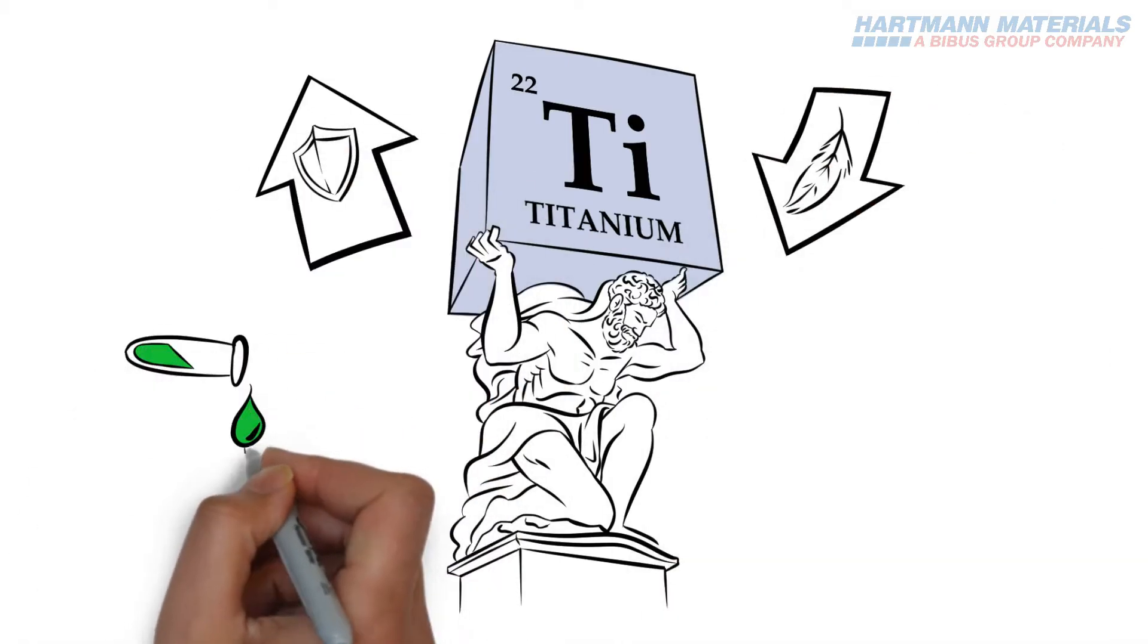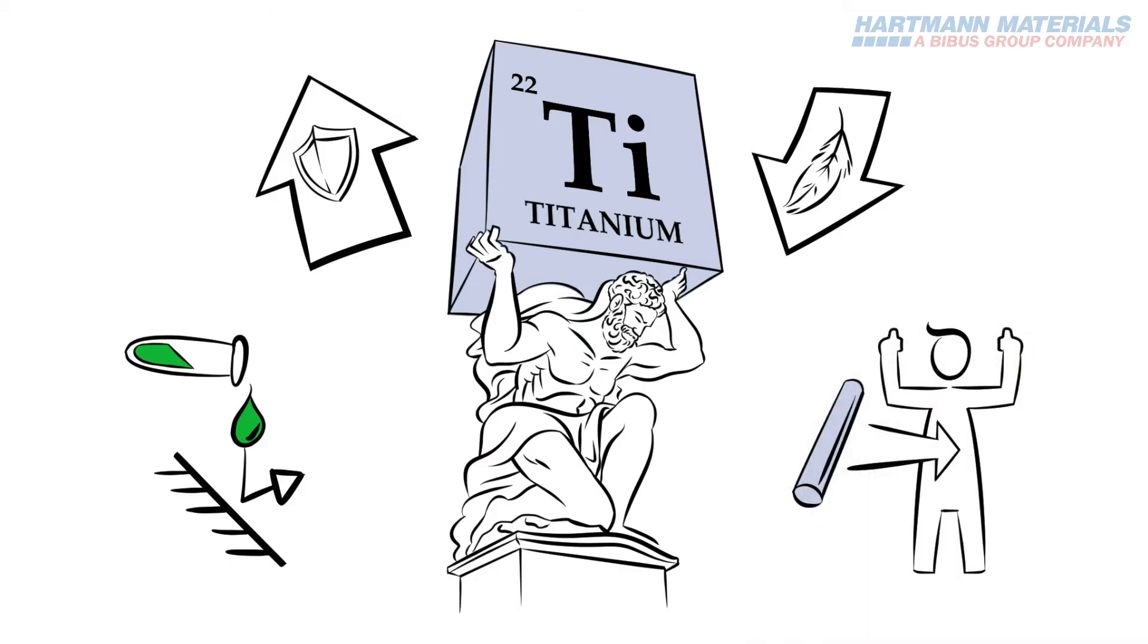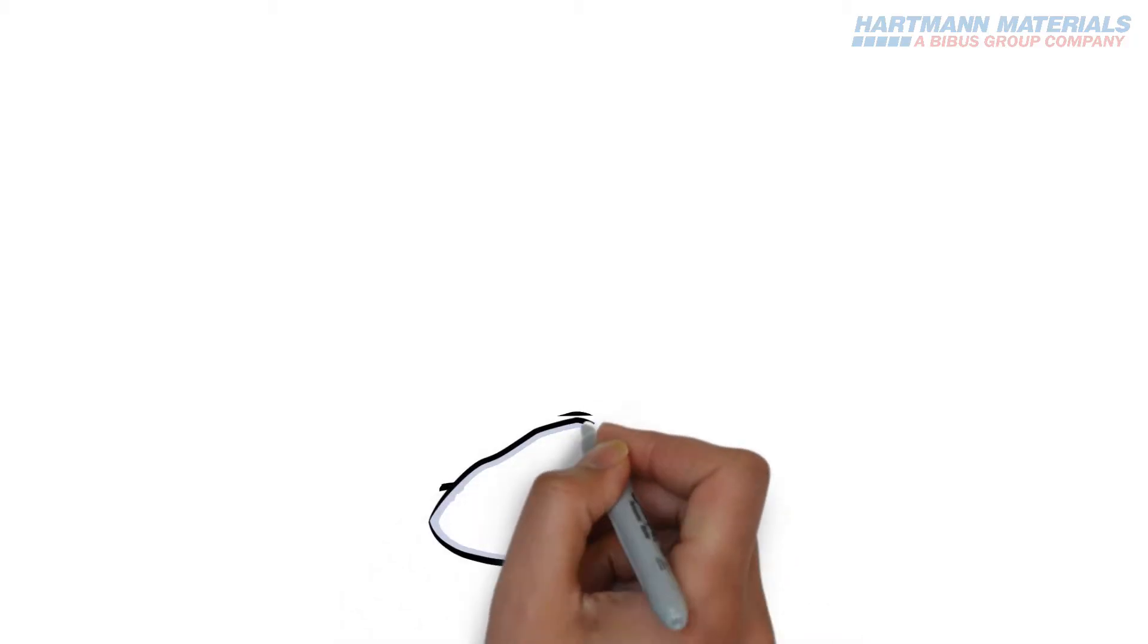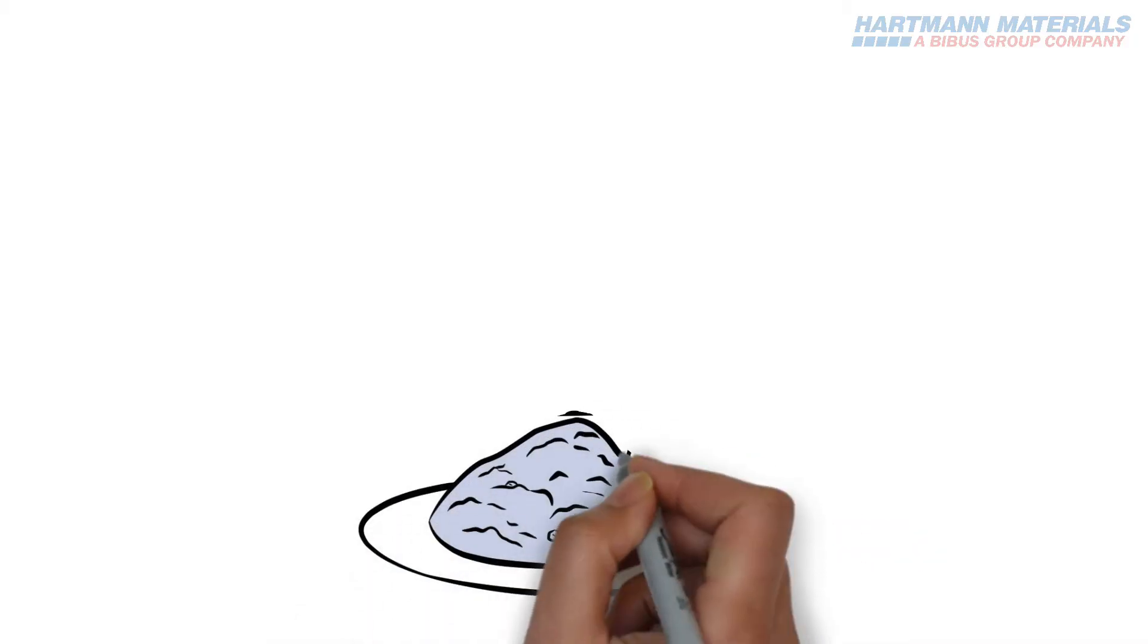It has high strength-to-weight ratio, is highly corrosion-resistant, and is biocompatible, meaning it can be used in the human body. We start at the beginning with the production of titanium from primary titanium ore.